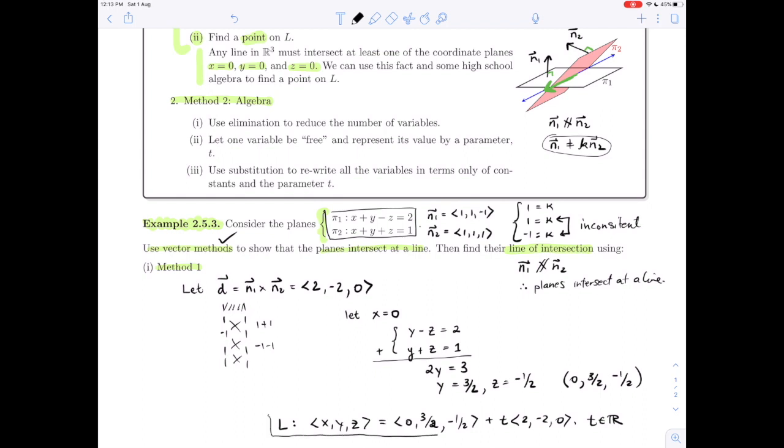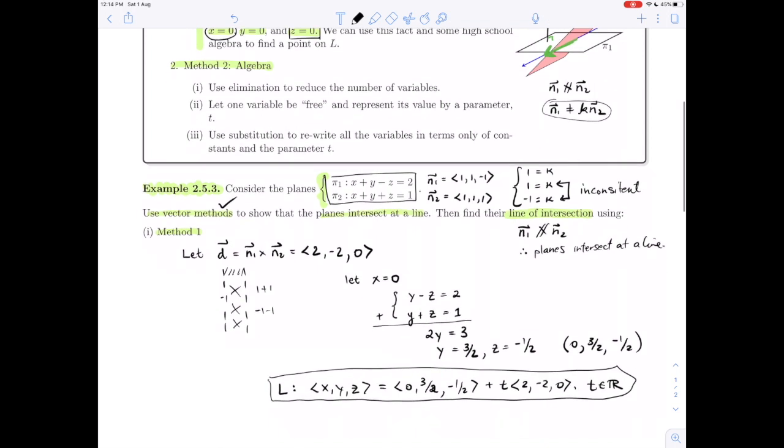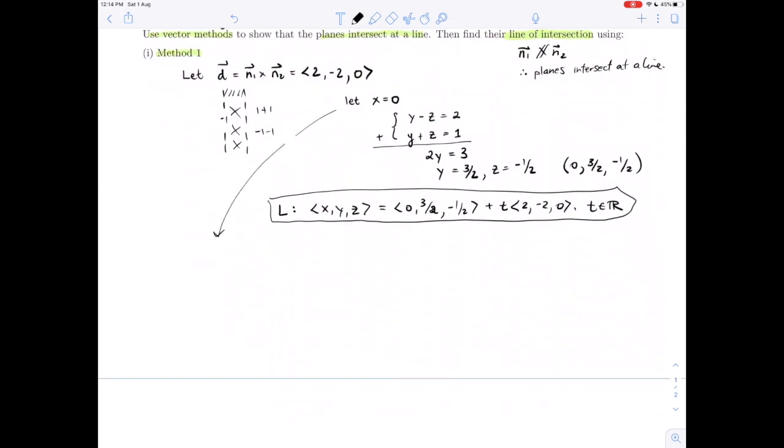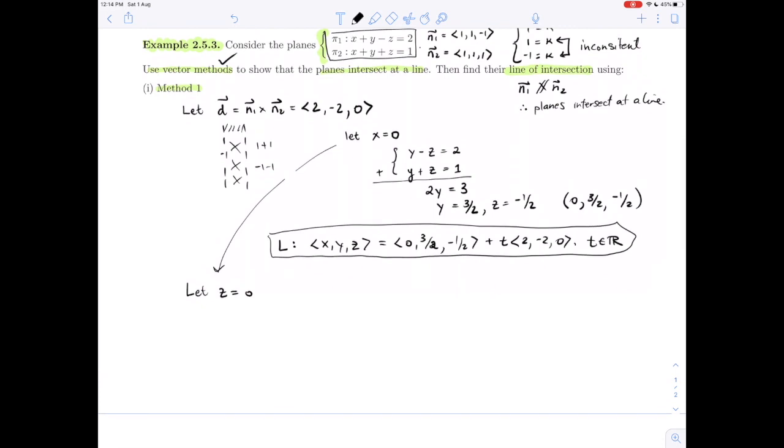Now I'm going to show you what would have happened if you had chosen z = 0. There'll always be one that works, but what does it look like if it doesn't work? If I had let z = 0 and gone into these equations, I would have had x + y = 2 and x + y = 1. Well, that can't be. If I didn't notice and I subtracted, I'd get 0 = 1, which should be even more obvious that that doesn't work—that is inconsistent. So what does that tell me geometrically?